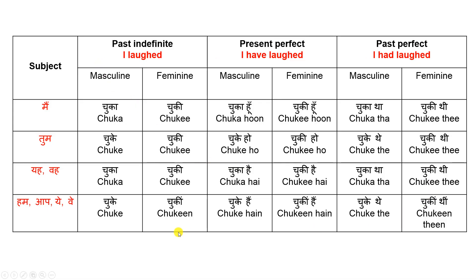Here is a table which gives you what the form of chuk will be with different subjects. Forms of chuk are used mainly in past indefinite tense, present perfect tense, and past perfect tense. The examples given are 'I laughed' for past indefinite, 'I have laughed' for present perfect, and 'I had laughed' for past perfect. We also see chuk and its forms used somewhere else, but we will learn about that in another video.